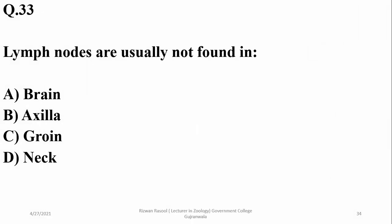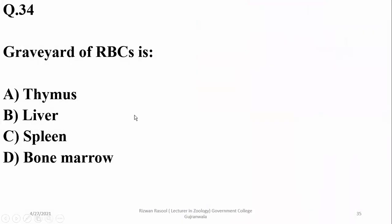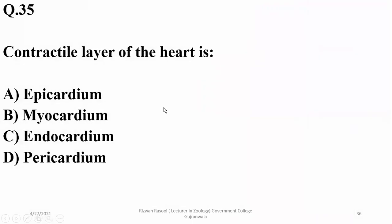Lymph nodes are usually not found in the brain, but are abundantly present in the axillary region as well as the groin or inguinal region. They are absent from the brain.